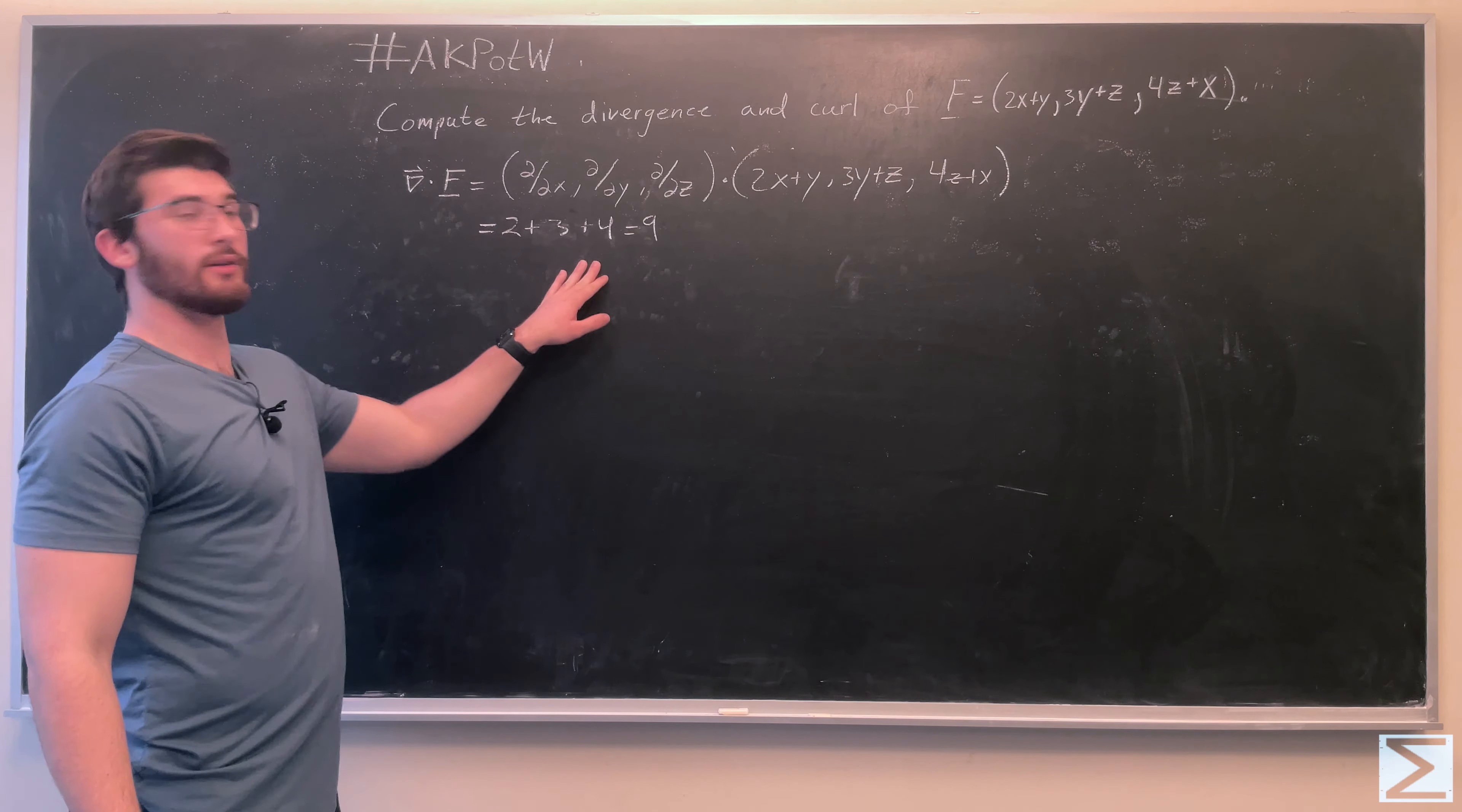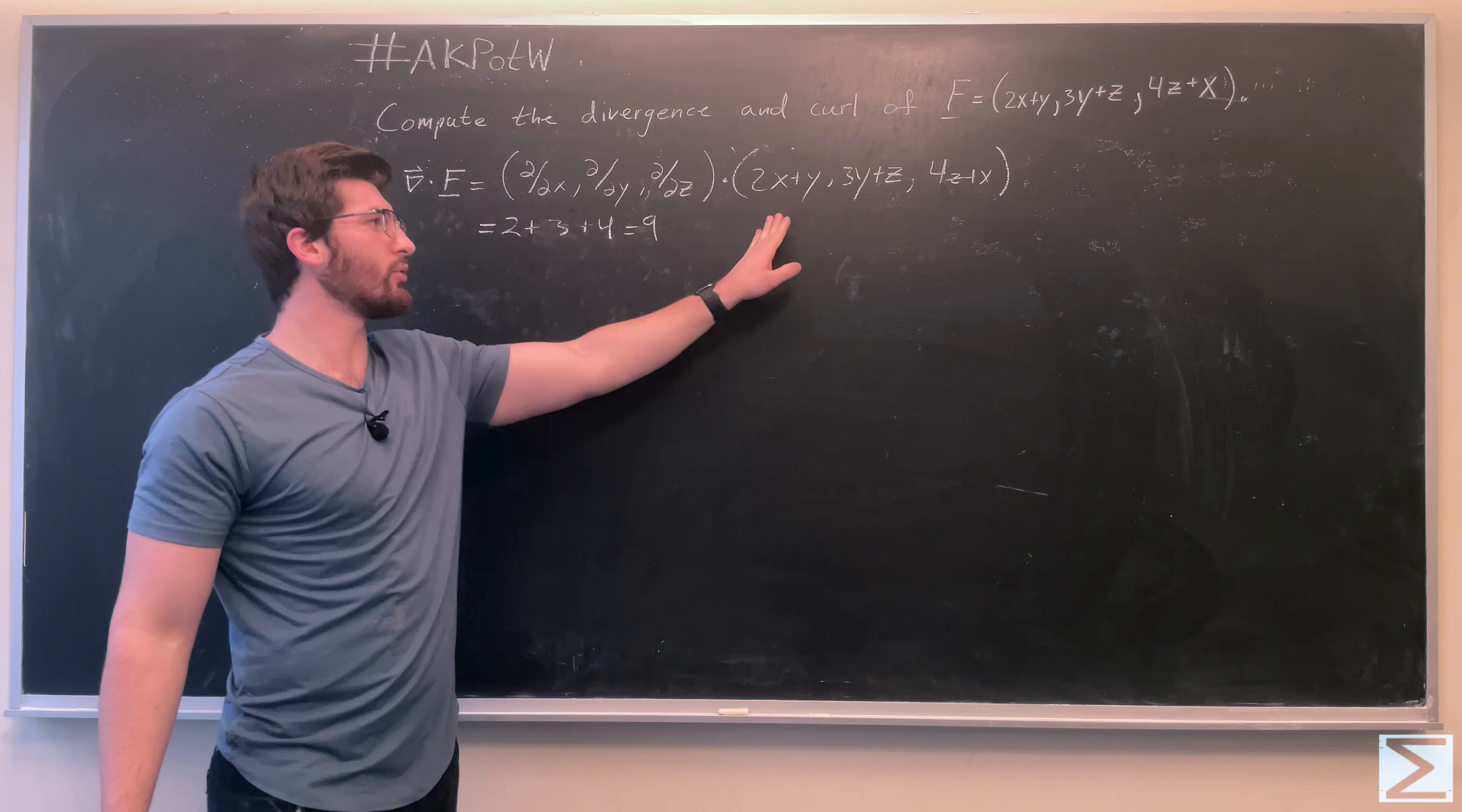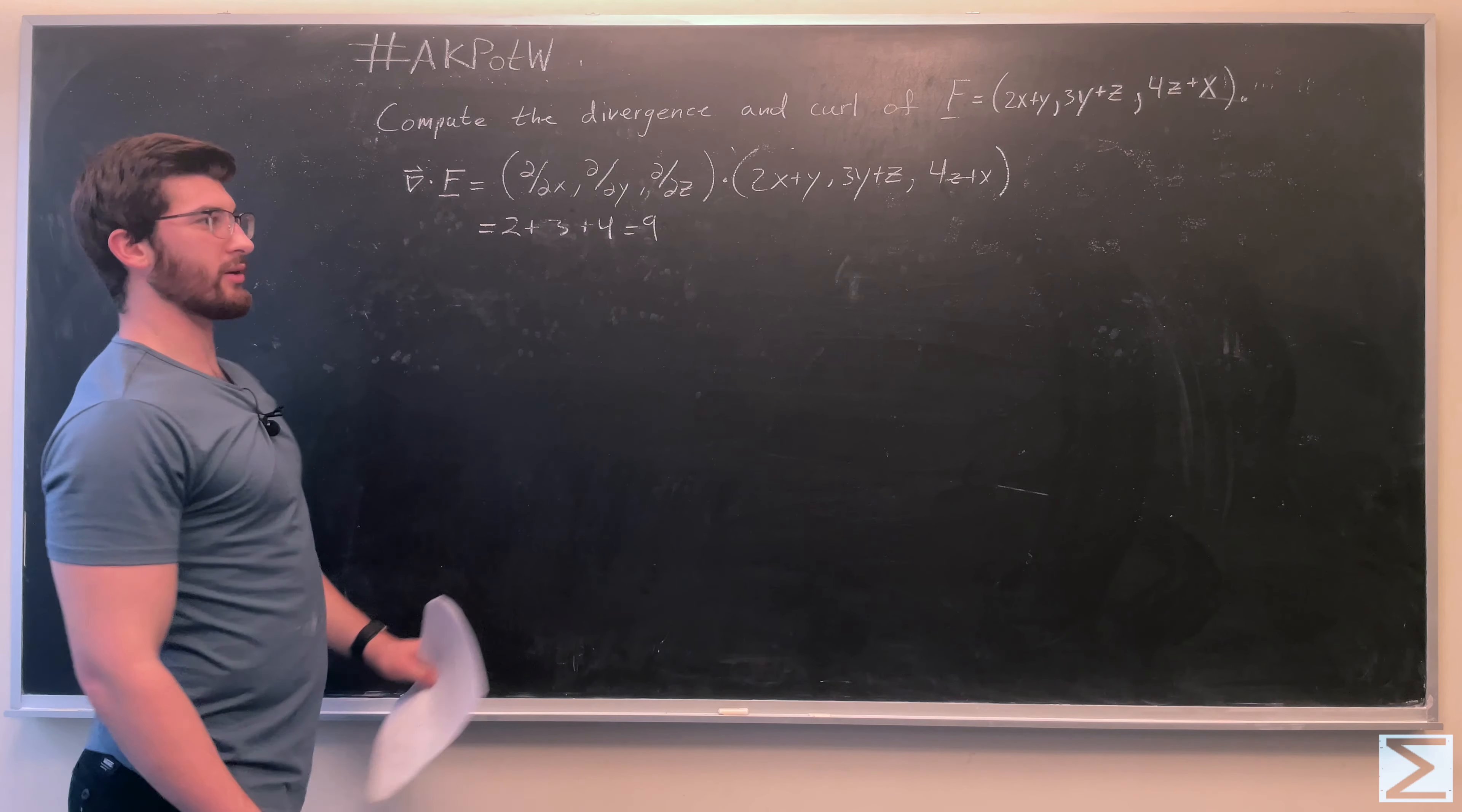So with each of these, the first partial derivative is 2, then 3, then 4, so we get that the divergence of the vector field is going to be equal to 9.